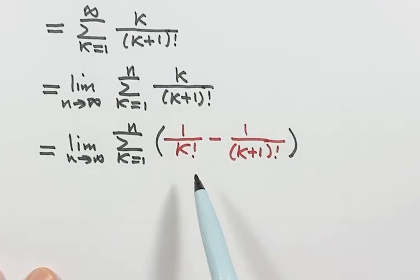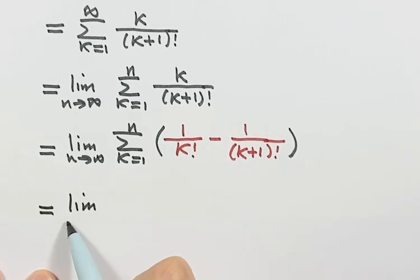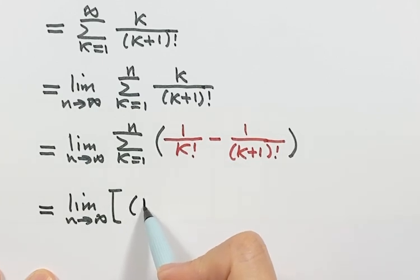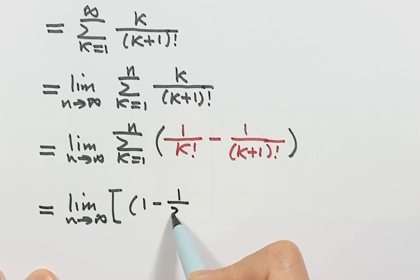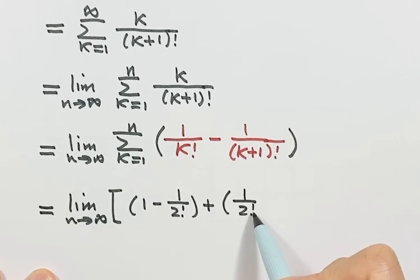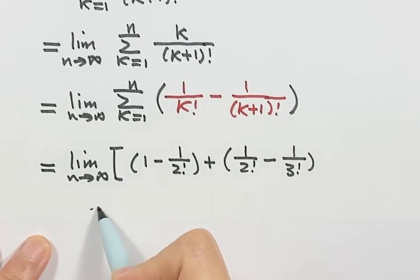Now let's expand this sum. So when k is 1, so here's 1, here's 2. So then we have 1 minus 1 over 2 factorial. Then k is 2, so this is 2, this is 3. So here we have 2 factorial, then here 3 factorial.